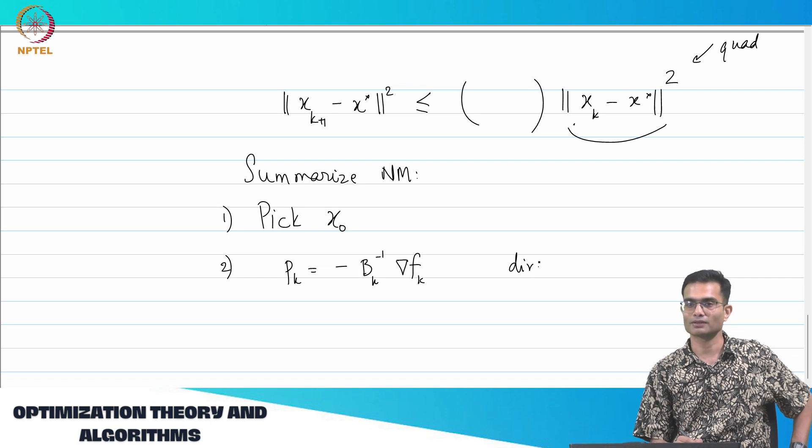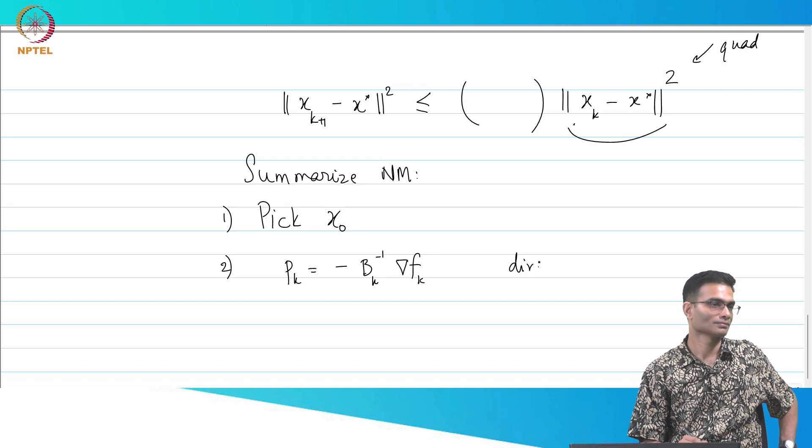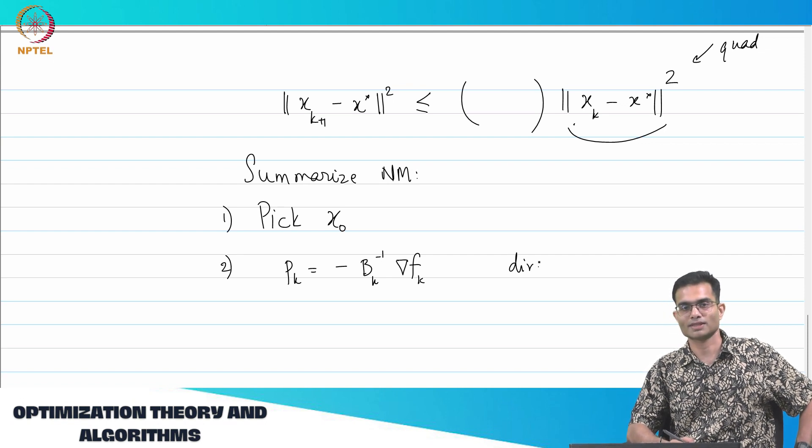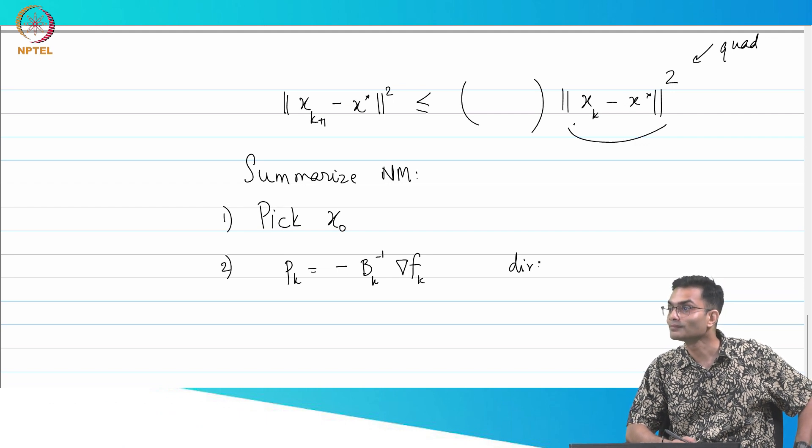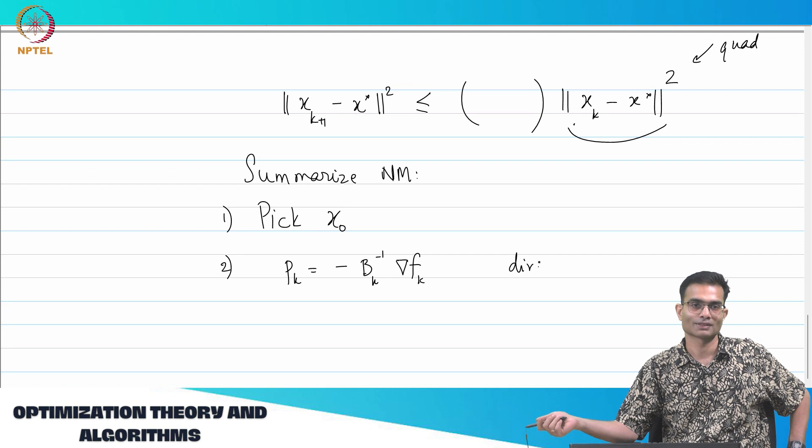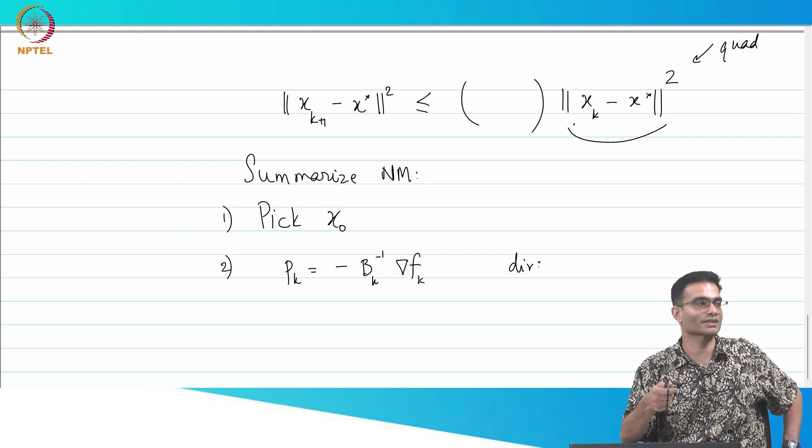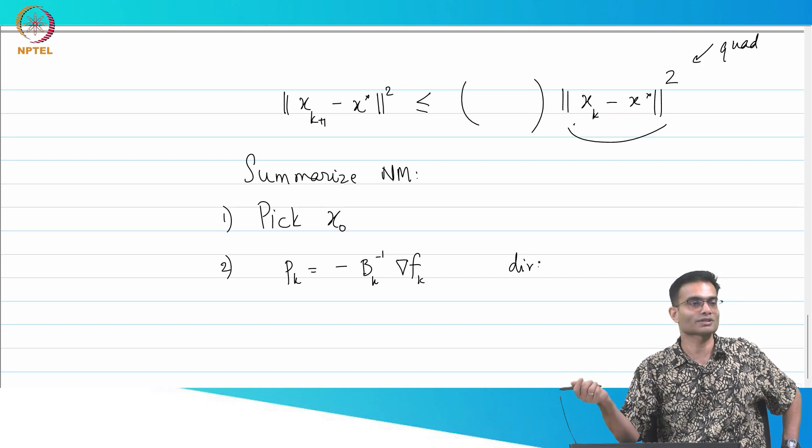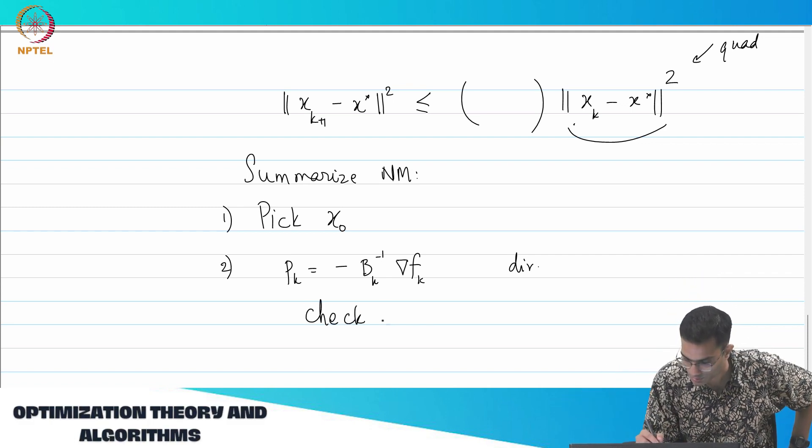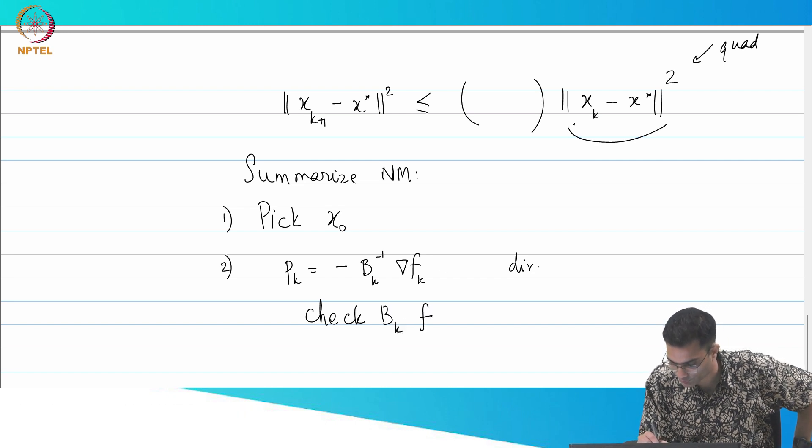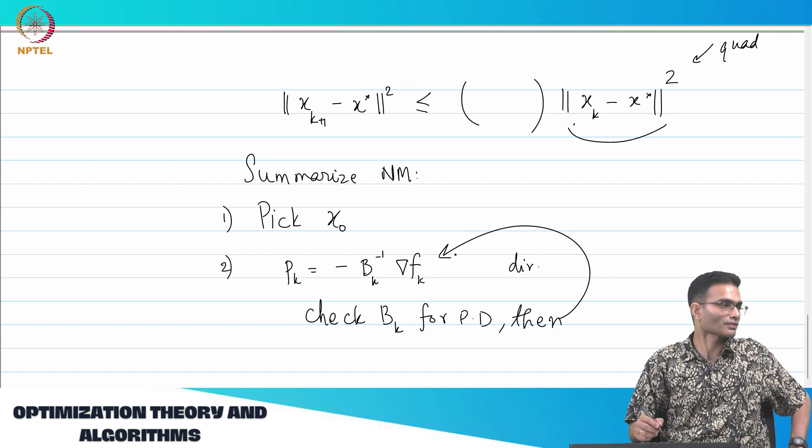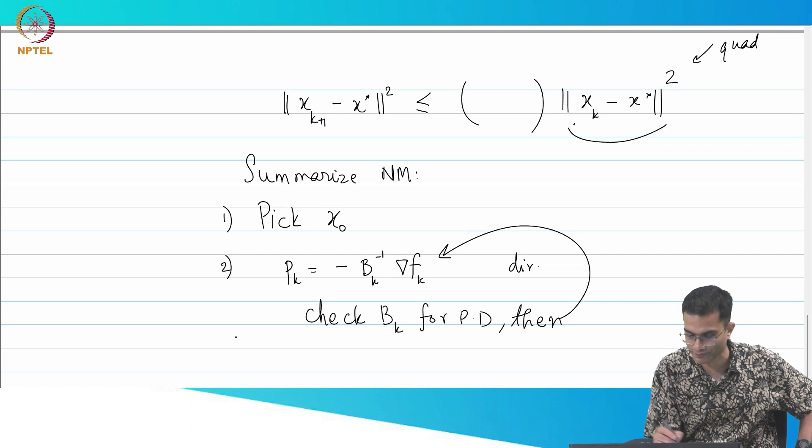Okay, one answer is find out alpha. Isn't there something more precise? Aren't you forgetting something? Not exact line search - exact line search may not be possible. Before you get onto the bus, you need to buy the ticket. What's the ticket? Check if it is a descent direction. How do I check? Is Bk positive definite? If Bk is not positive definite, pk is not going to be a descent direction. So then check Bk for PD, and actually first you check for this and then you compute this. Otherwise, it is a waste of time.